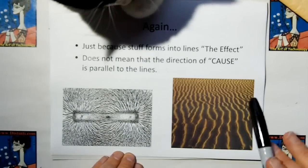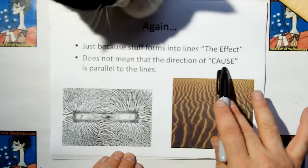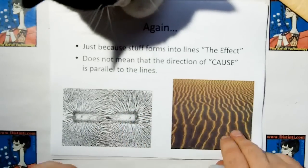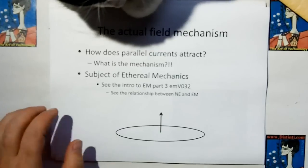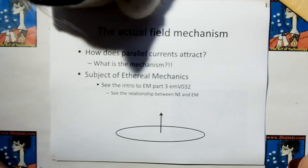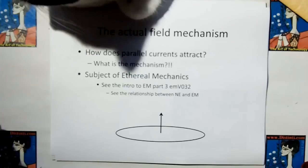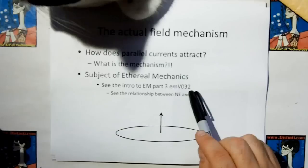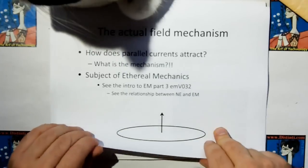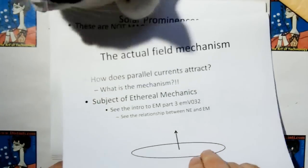In the next video, we'll discuss non-magnetized objects in a magnetic field and just demonstrate how this pattern actually forms. Again, just because stuff forms into lines, the effect does not mean that the direction of the cause is parallel to the lines. The actual field mechanism, how do parallel currents attract? What is the mechanism? Well, that's subject of ethereal mechanics. And if you see the intro for part three, which is EMV 032, it should be released in a couple of days.